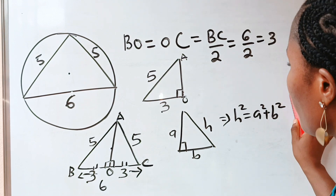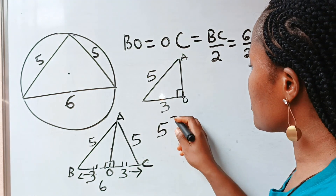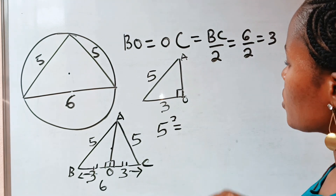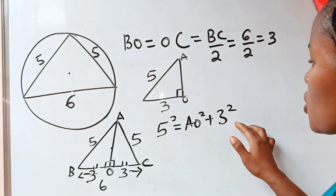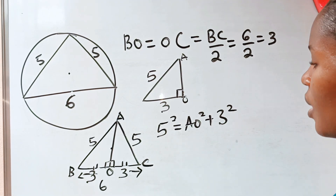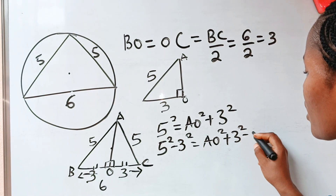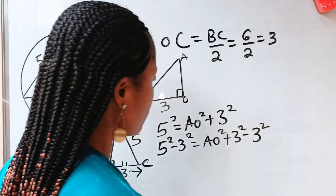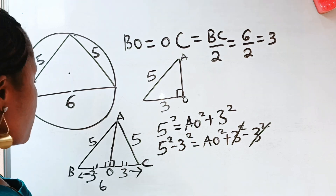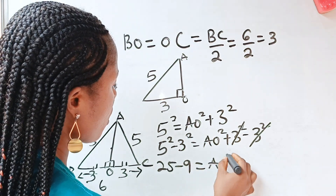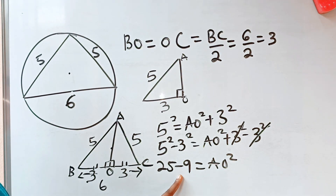Relating this to what we have: the hypotenuse is five, so five squared equals AO squared plus three squared. Subtracting three squared from both sides gives five squared minus three squared equals AO squared. That is 25 minus 9, which equals 16. So AO squared equals 16.